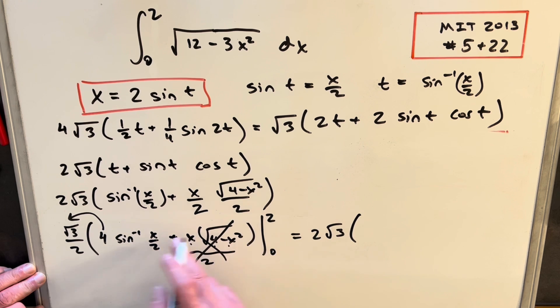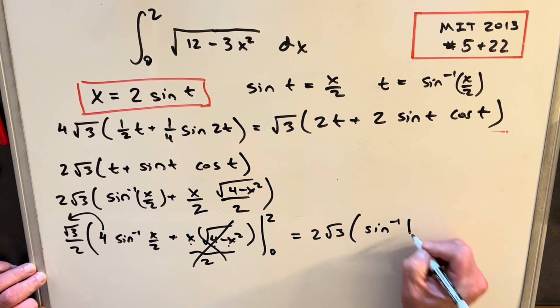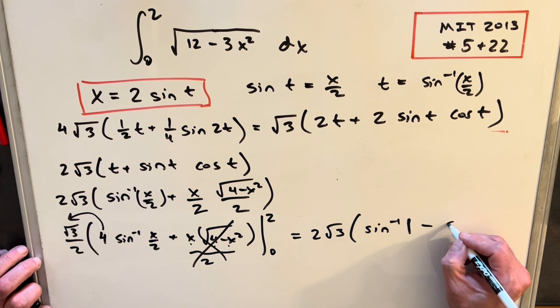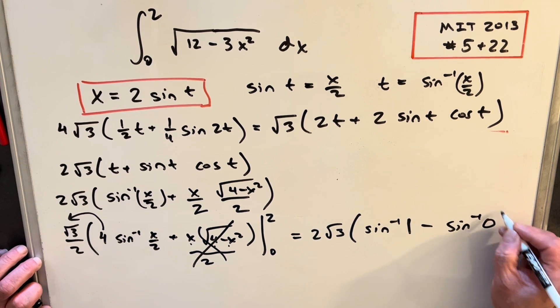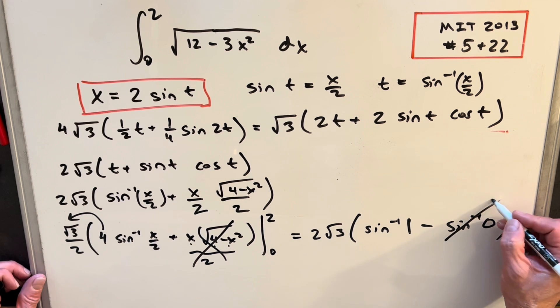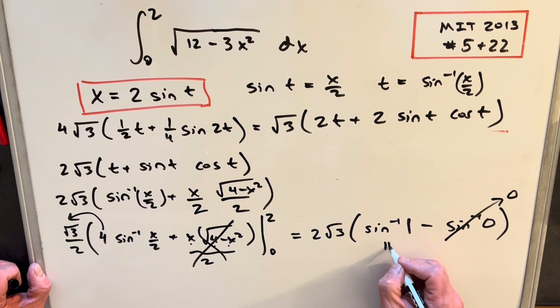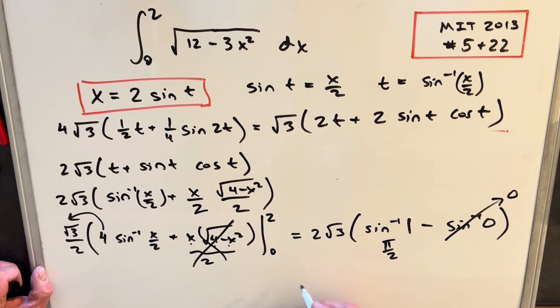So first, if we plug a 2 in here, we're evaluating it at sine inverse of 1. And then plugging a 0 when we're going to be evaluating sine inverse at 0. And then our value of sine inverse at 0 is just 0, so we can forget this term. And then sine inverse at 1, this actually happens at pi over 2. So then all we need to do is multiply pi over 2 times 2 square root of 3, and we get pi times the square root of 3.